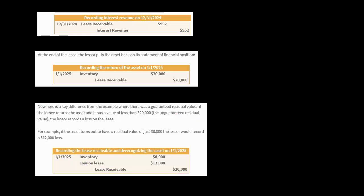What if it was worth just $8,000 when the lessor received it? With a guaranteed residual value — which is not what's going on here — the lessee would have to make the lessor whole and say, 'We guaranteed $20,000 and it's only worth $8,000, here's an extra $12,000 cash.' That is not the case here. This is an unguaranteed residual value, so the lessee doesn't have to pay the lessor anything. They gave the asset back and it's worth $8,000. The lessor bore the risk. So the lessor is going to record a loss, increasing their inventory account by $8,000 and reducing their lease receivable account to zero — the difference is recorded as a loss on the lease, which will reduce their profitability on their P&L statement.